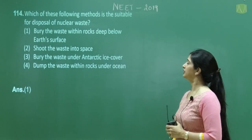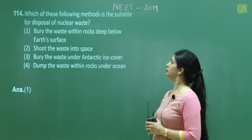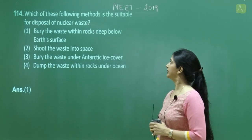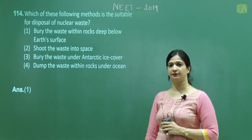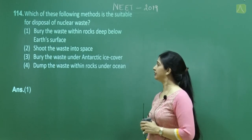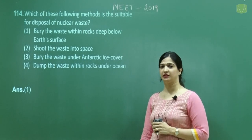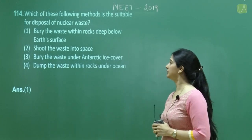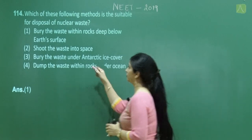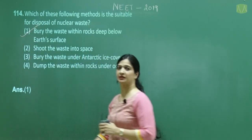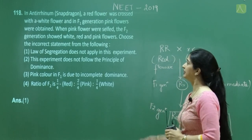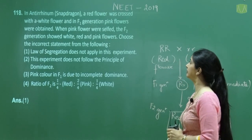Question number 114: Which method is suitable for disposal of nuclear waste? Options include burying under rocks deep below the earth's surface, shooting into space, burying under Antarctic ice, or dumping under ocean rocks. The correct answer is option 1 — burying the waste within rocks deep below the earth's surface. This is a direct NCERT-based question.